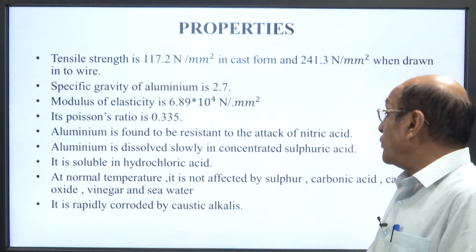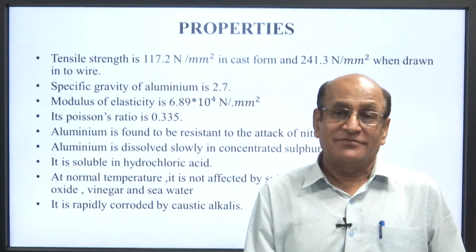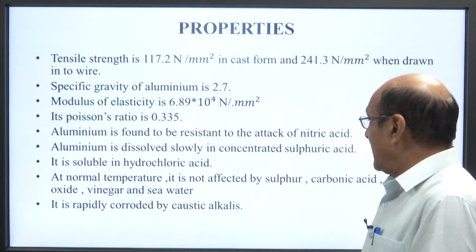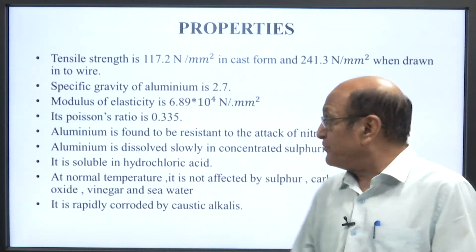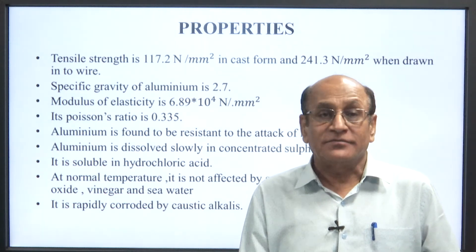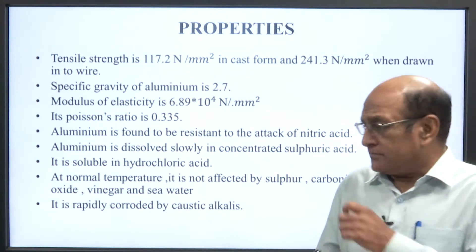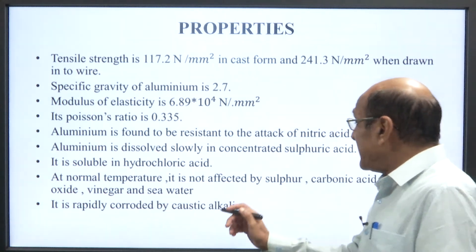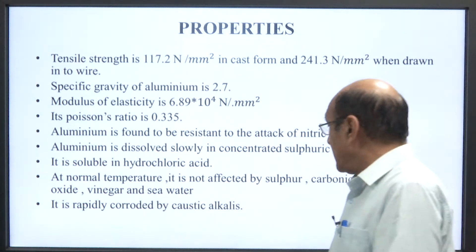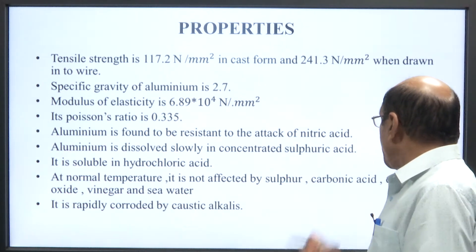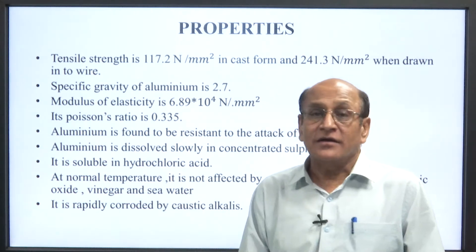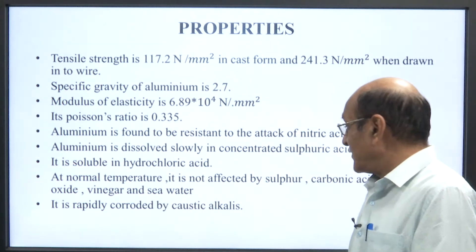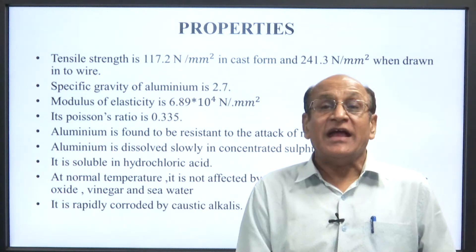Aluminium is found to be resistant to attack by nitric acid. Aluminium is dissolved slowly in concentrated sulfuric acid and is soluble in hydrochloric acid. At normal temperature, it is not affected by sulfur, carbonic acid, carbonic oxide, vinegar, and sea water. It is rapidly corroded by concentrated caustic alkalis.